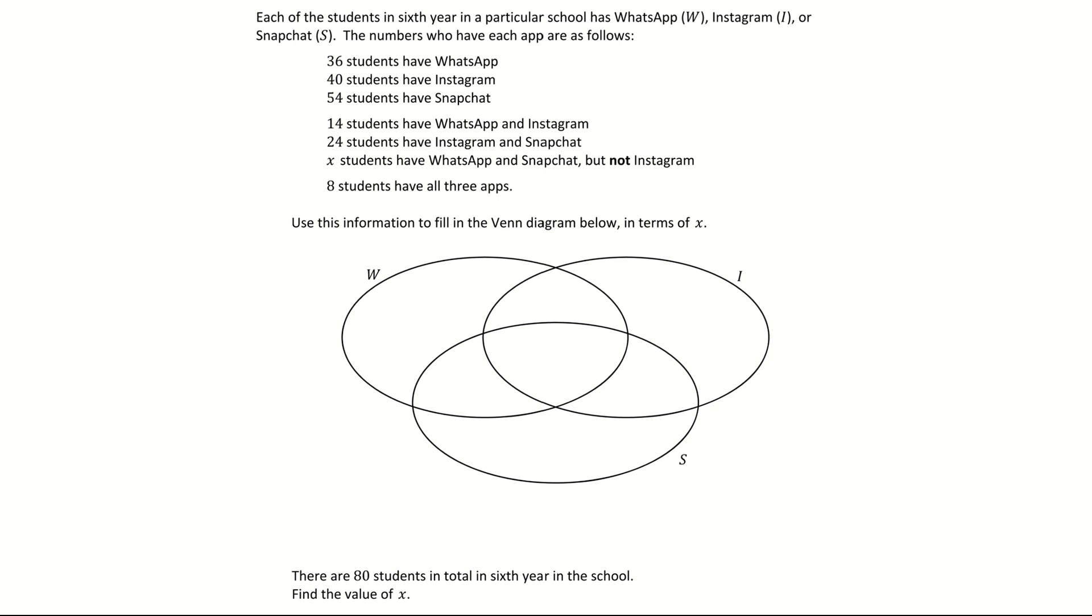So as we look at the question here it's saying each of the students in sixth year in a particular school has WhatsApp, Instagram or Snapchat. The numbers who have each app are as follows. Use this information to fill in the Venn diagram below in terms of x.